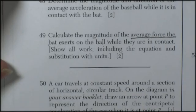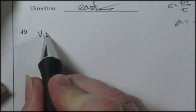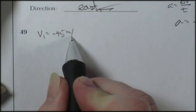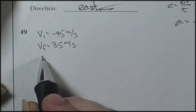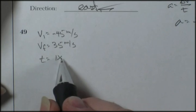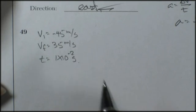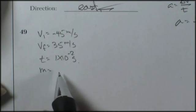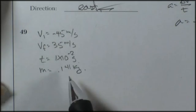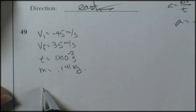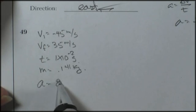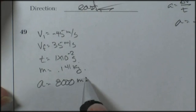So, you need to show all work, including equation and substitution with units. So, I know my velocity initial was negative 45 meters per second. Velocity final was 35 meters per second. Time of contact was 1 times 10 to the negative 2 seconds. And my mass, what was the mass of that thing? 0.141 kilograms. That was given to me in the problem. Now, I later found that the acceleration was 8,000 meters per second squared. So, I can list that as a known if I want to.